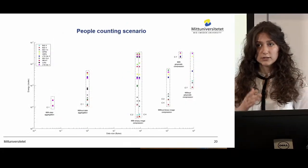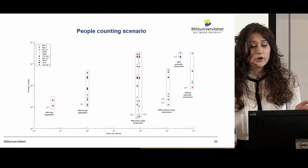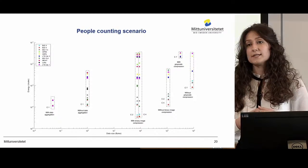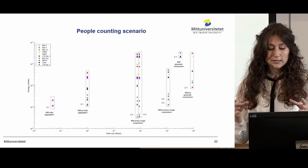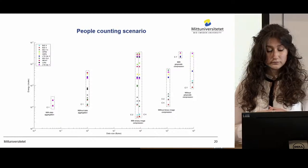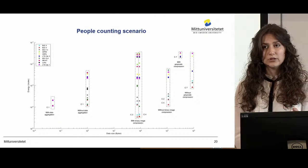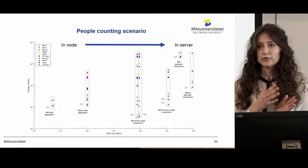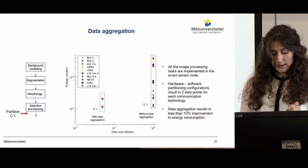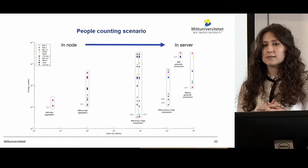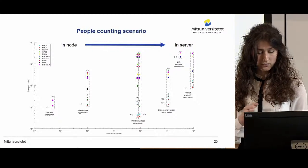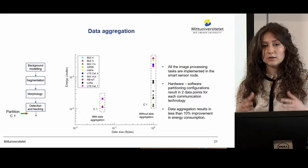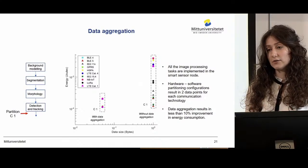We also considered a real-time performance constraint, comparing overall latency to the frame rate of the imaging sensor, and omitted all data points that couldn't meet the timing constraint. Each column of data points represents the intermediate data volume produced, and as we shift from left to right we are shifting the computational load from the node towards the server. We also consider different data reduction techniques such as data aggregation and image compression. With data aggregation, all processing is implemented in the smart sensor node and only the final result is transferred to the server.